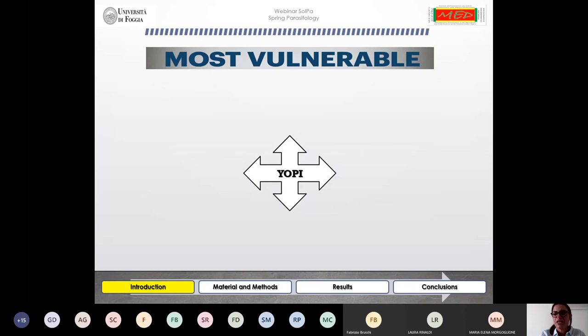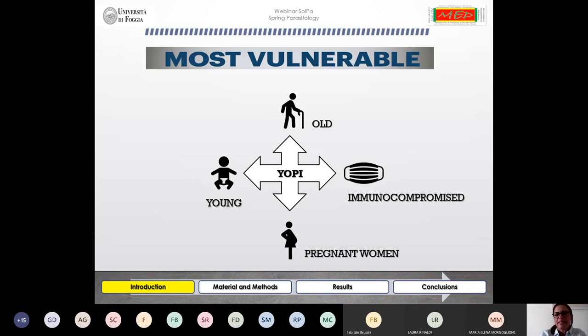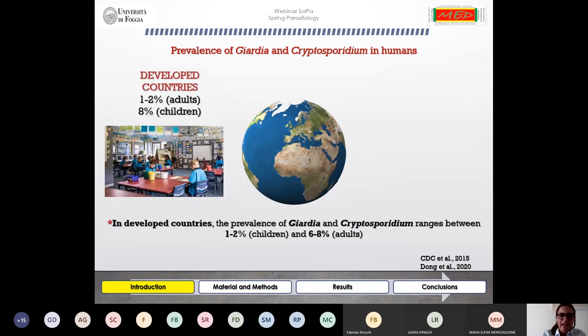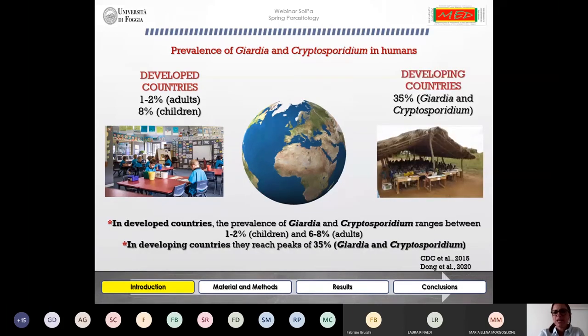The prevalence of Giardia and Cryptosporidium in humans varies between developed countries and developing countries. In developed countries, it ranges between one and two percent in adults and eight percent in children, whereas in developing countries, prevalence reaches 35 percent for both Giardia and Cryptosporidium.